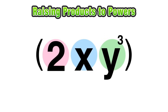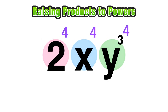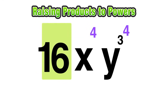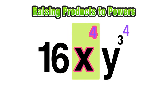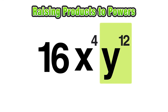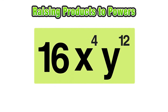Let's extend this thinking to a real example. If we have the product (2xy³) all raised to the fourth power, we distribute the fourth exponent to each part of the product and lose the parentheses. Going piece by piece: 2 to the fourth power is 16; x to the fourth we leave as x to the fourth; and y to the third power raised to the fourth power — using the power-to-power rule, 3 times 4 equals 12. So our simplified solution is 16x⁴y¹².